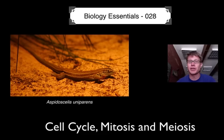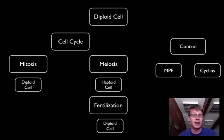We're not going to go into the specifics of mitosis and meiosis — I've got videos on each of those that talk about the different phases. What I want to talk about here is in general what do mitosis and meiosis do, how does the cell cycle work, and how is it controlled?